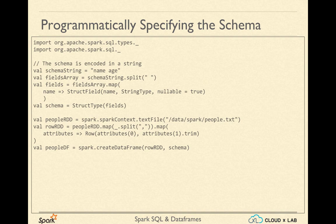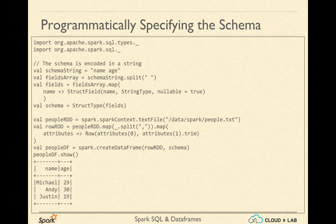Using the fields schema and the RDD having rows, we can easily create the DataFrame using the createDataFrame method. This method takes the row RDD as the first argument and the schema as the second argument. The DataFrame created here has the name people_df and is ready for various DataFrame-based operations. Let's take a look at the DataFrame using the show method. You can see that the DataFrame has been successfully created programmatically. You can register it as a view and run SQL queries on it.